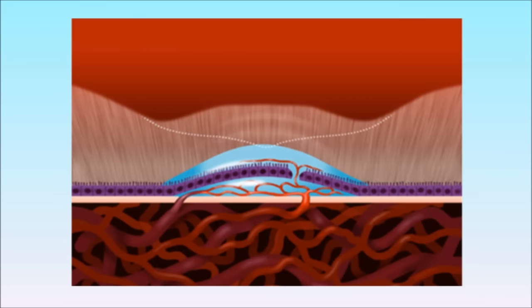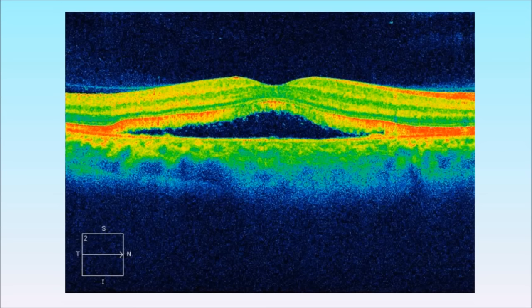In wet macular degeneration unwanted blood vessels grow into the retina from the deeper choroidal layers. These unwanted blood vessels can hemorrhage and leak fluid into the retina. This can result in massive visual loss if left untreated.